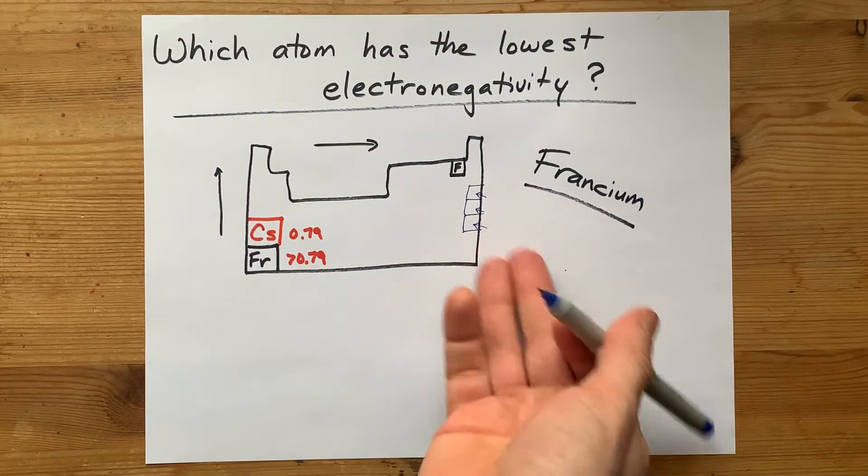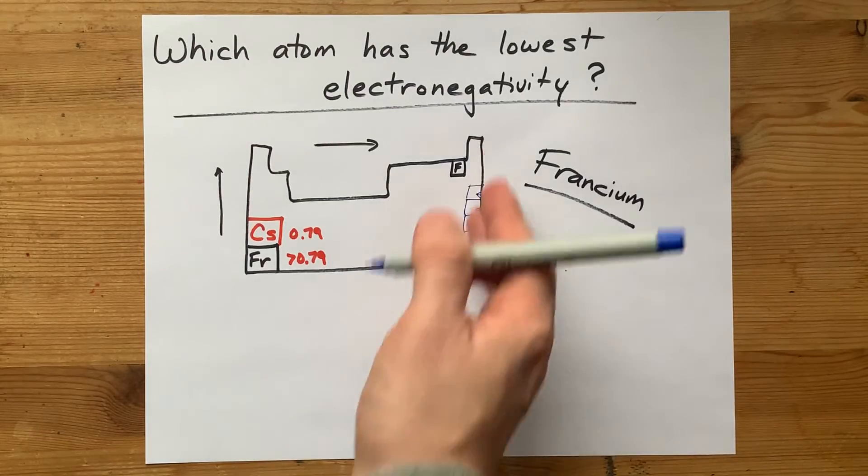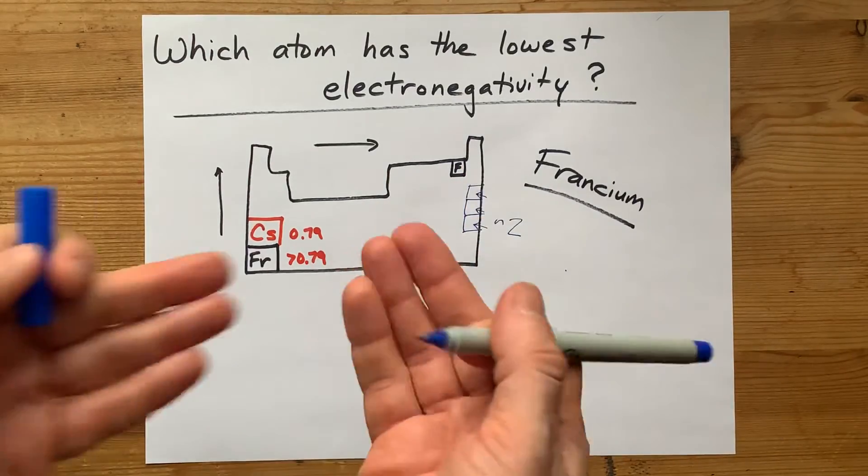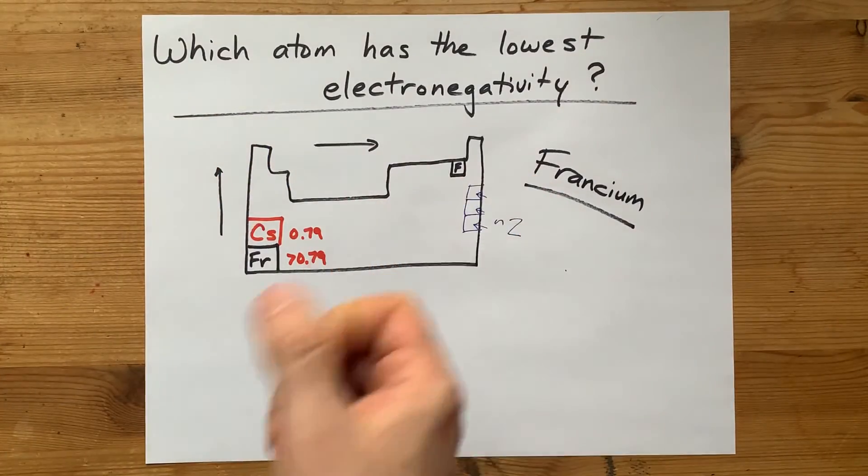They actually end up being relatively high, you know, 2, 2 point something, etc. So don't bother giving those as answers either. Some of them do have measured electronegativities and are higher than you might expect.